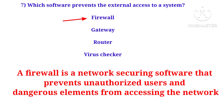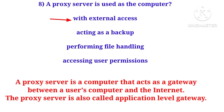Next question: which software prevents the external access to your system? Firewall. It is a network security software that prevents unauthorized users from accessing any document. Next question: a proxy server is used as a computer that acts as a gateway between a user's computer and the internet.